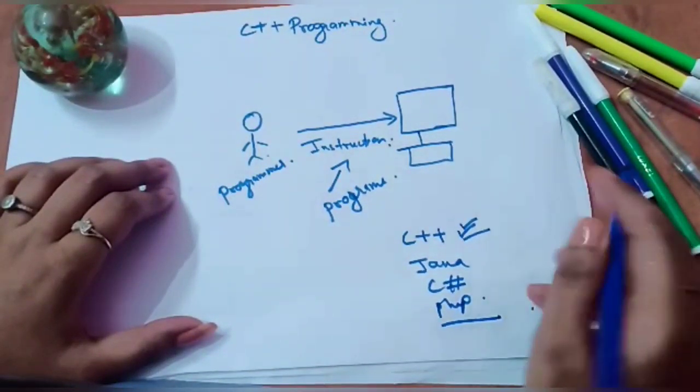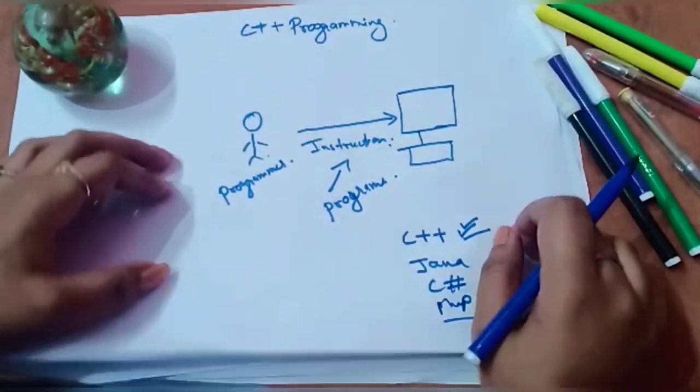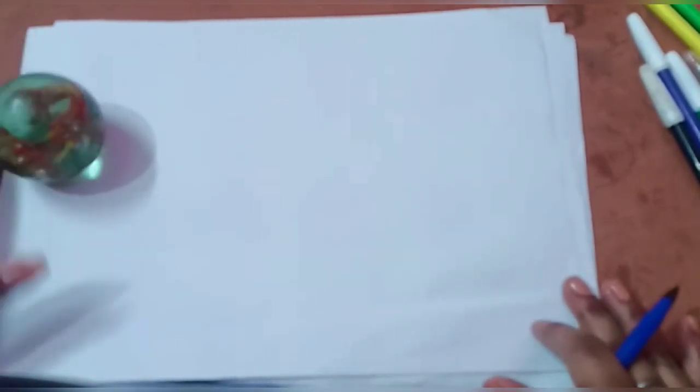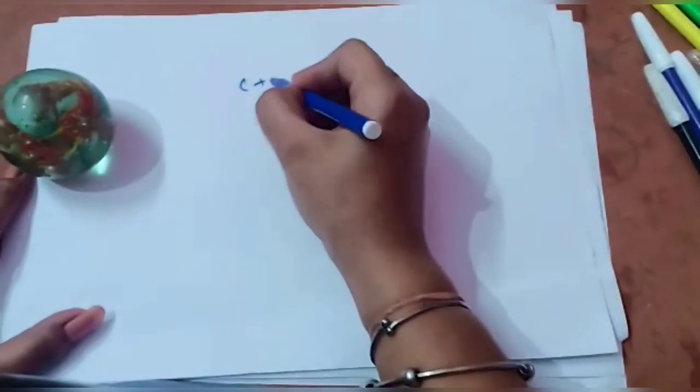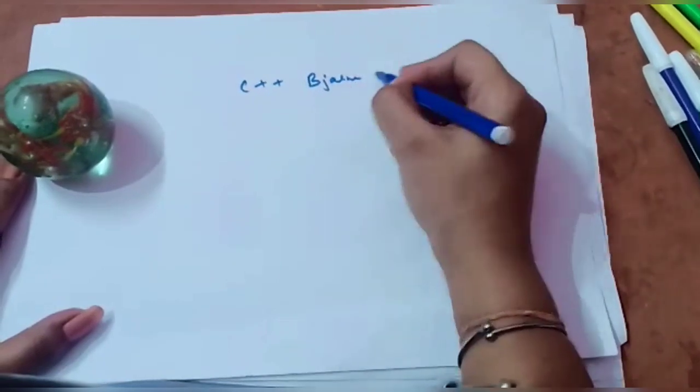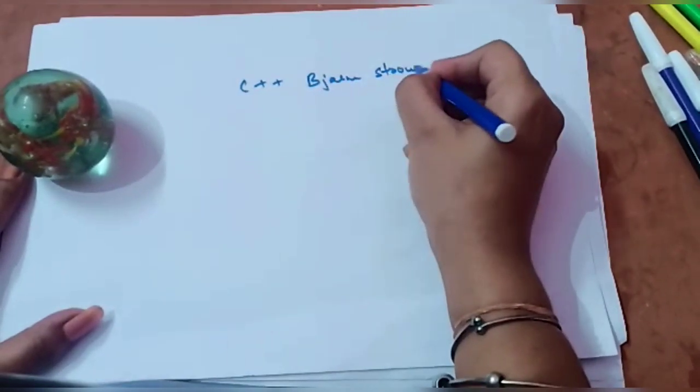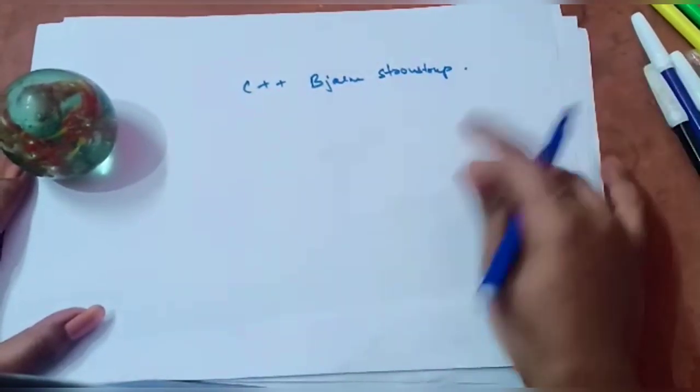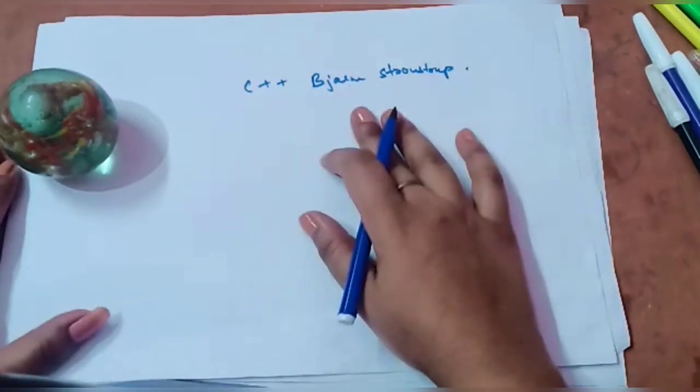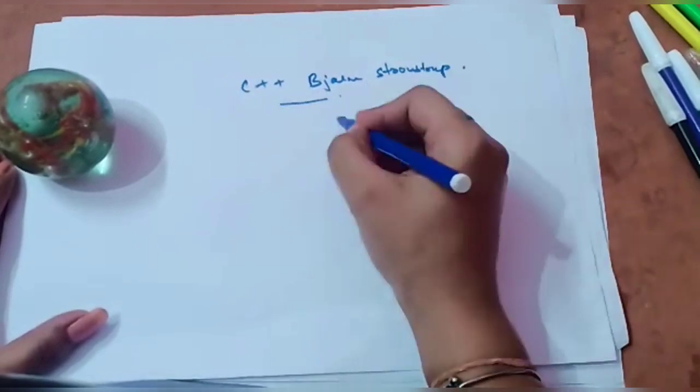Now let us see how and when C++ was created. C++ was created by Bjarne Stroustrup and his team in the labs of New Jersey. Initially, they named this programming language as C with classes in the year 1979.